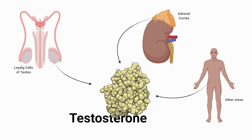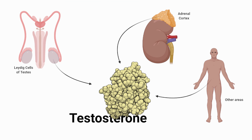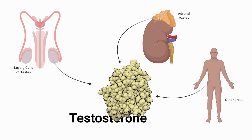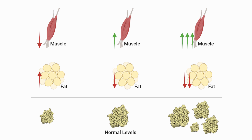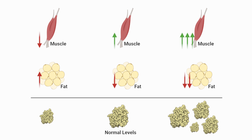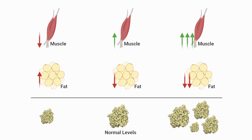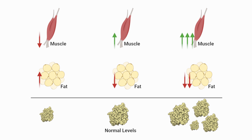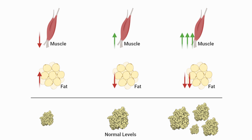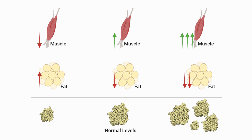Now, to the literature. Testosterone is primarily produced by the Leydig cells of the testes, while a little comes from other areas of the body, like the adrenal cortex, and circulates throughout our body. Reductions in testosterone below normal levels leads to reductions in cell protein synthesis, reductions in strength, and increases in fatness. However, if testosterone is replaced back to normal levels, all those effects are reversed.